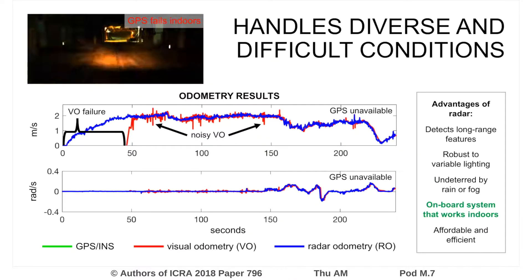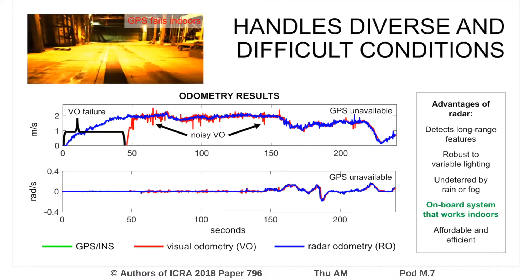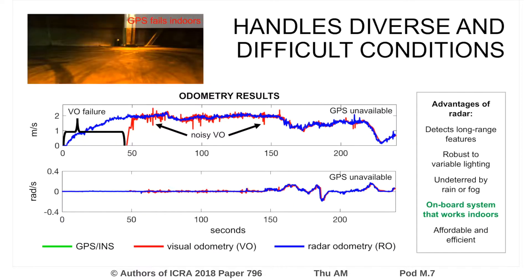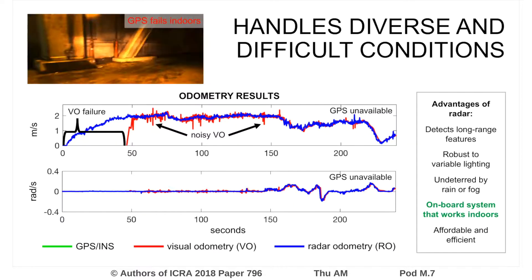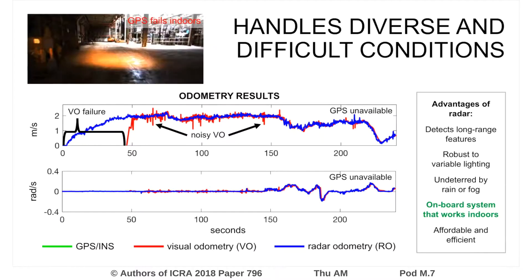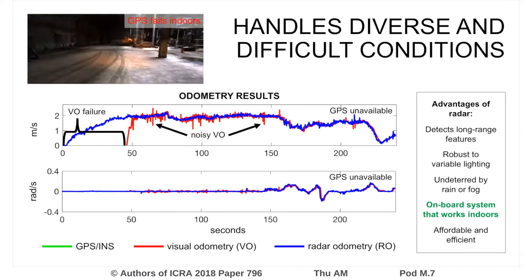In this crowded and dark indoor environment, GPS is unavailable. Visual odometry is highly noisy and periodically fails, while radar odometry remains robust.